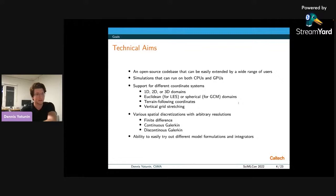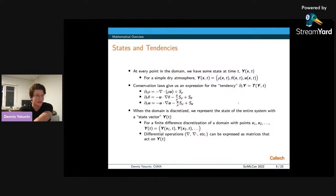So moving on to KlimaCore, a bit of mathematical background. At every point in the domain X, we have some state at time T, denoted by Y of X and T. As an example for a simple dry atmosphere, the state could involve the density rho and the potential temperature theta and the wind velocity at every point U. Instead of theta, we could use, for example, energy E or energy density rho E. And then a set of conservation laws gives us an expression for the tendency of the state, so how it evolves over time. And in this case, I've written out the tendencies for each of the three variables. It's advection plus source terms, essentially.